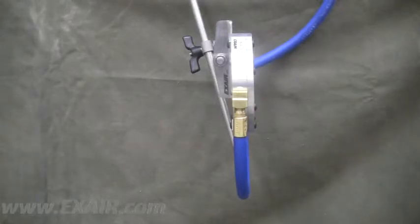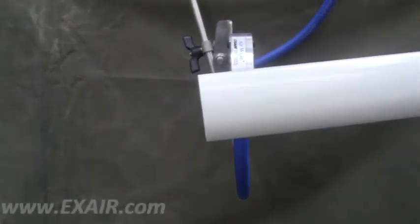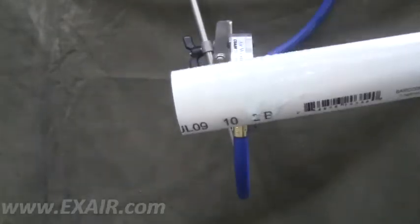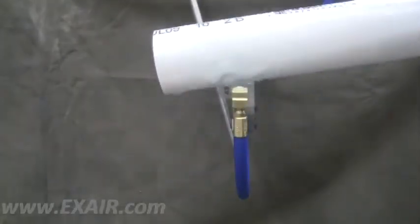Here we have a PVC pipe coated with a soapy liquid. In a few seconds we are able to wipe a section of pipe with no residue remaining.